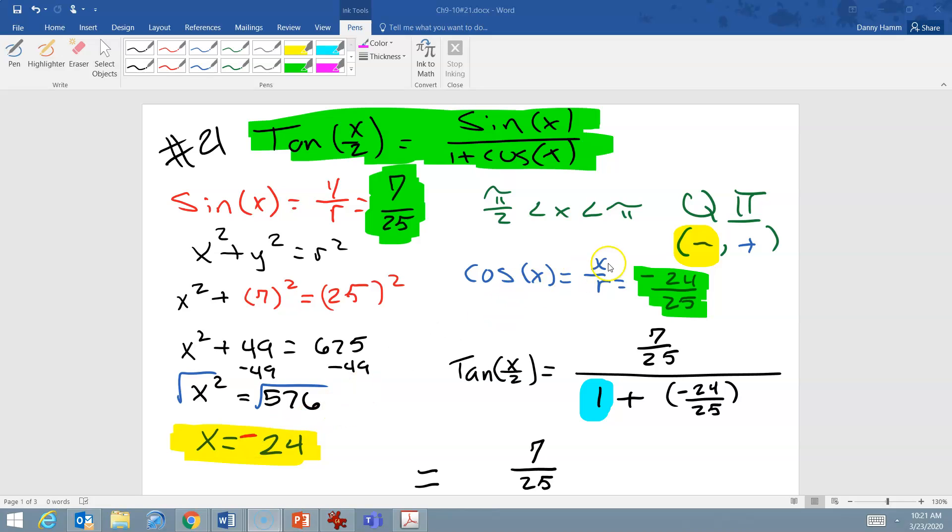So now when we write our cosine, which is x over r, we're using negative 24 over 25. Now these are the values that we're going to plug into this trig identity. So sine of x now becomes 7 over 25, and cosine of x becomes negative 24 over 25.